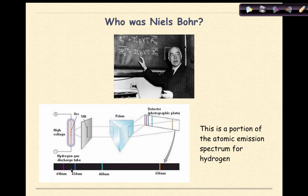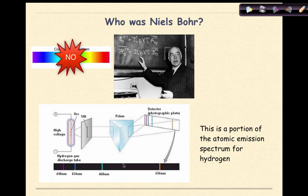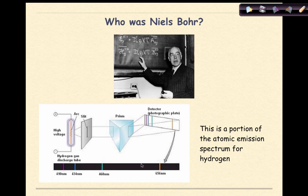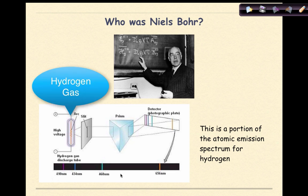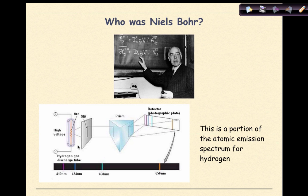This is a spectrum that contains specific colors or wavelengths. Unlike a rainbow, a line spectrum is not continuous — you can see individual colors. The person who discovered this phenomenon was Niels Bohr, a Danish physicist, in 1913. Bohr took a glass tube filled with hydrogen gas and passed an electric current through it. When the light was passed through a prism, he observed four distinct colors.